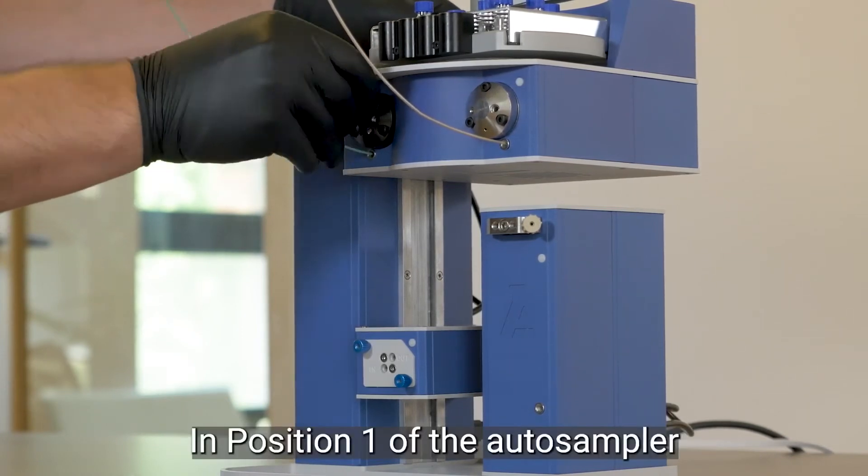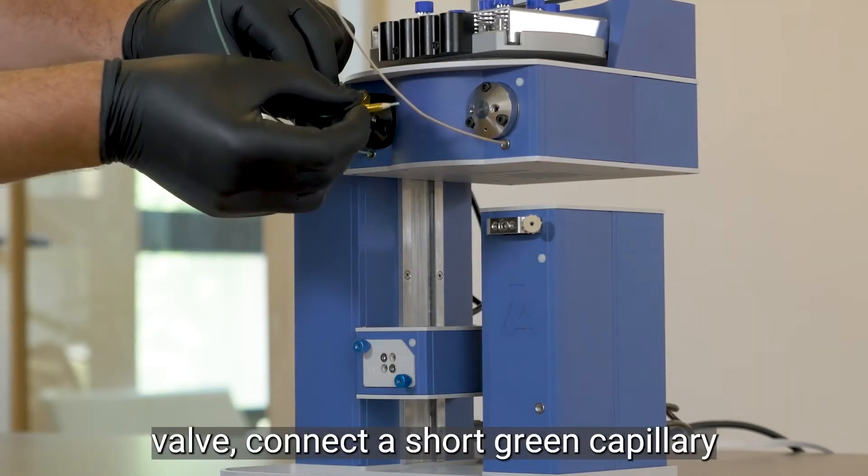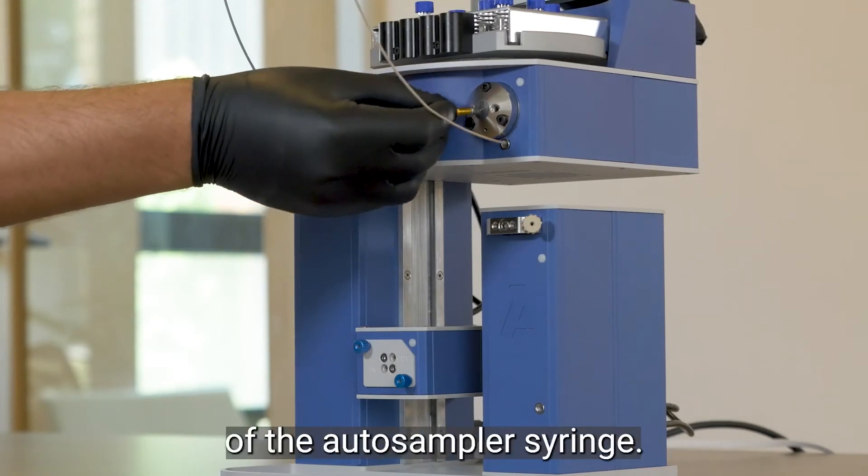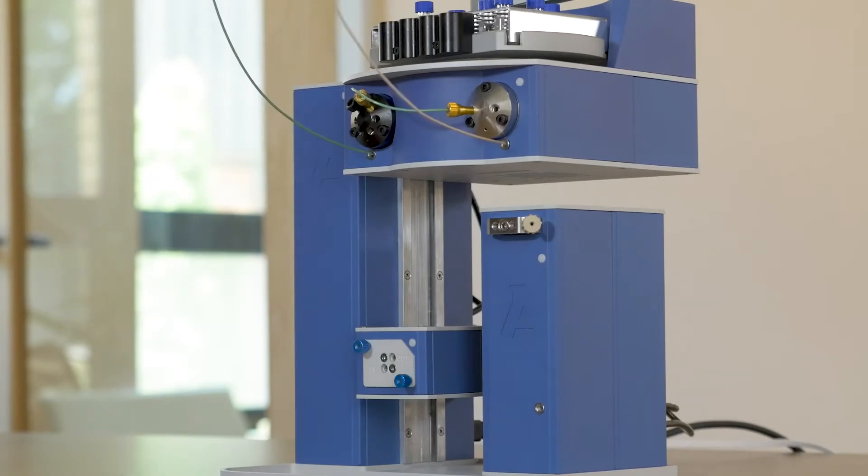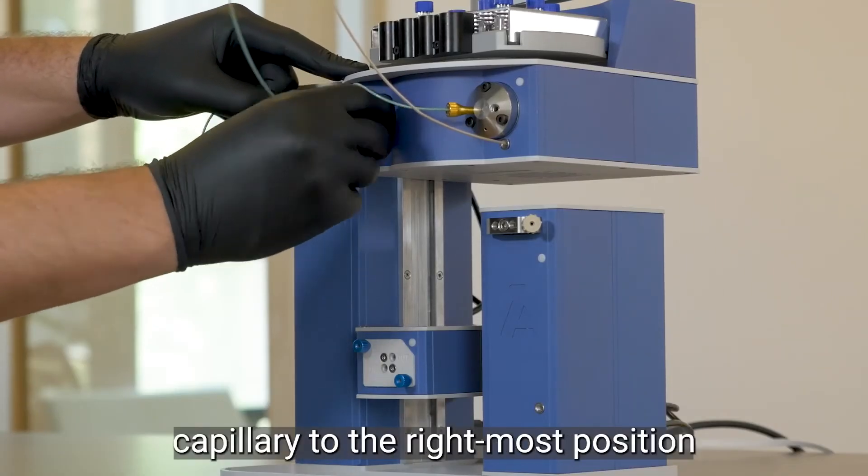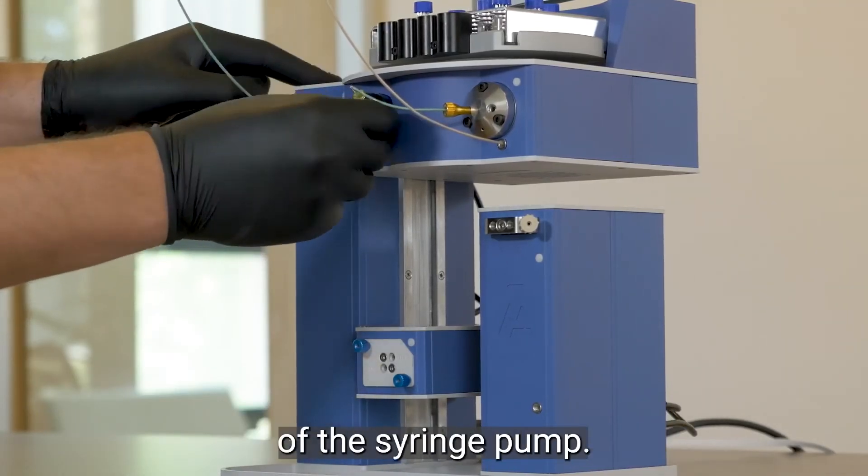In position one of the Auto Sampler valve, connect a short green capillary to the left-most side of the Auto Sampler syringe. In position two, connect another green capillary to the right-most position of the syringe pump.